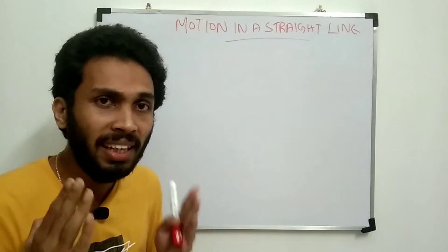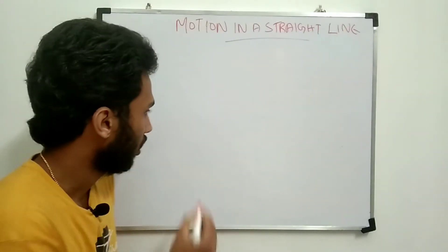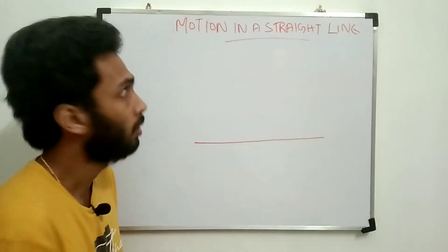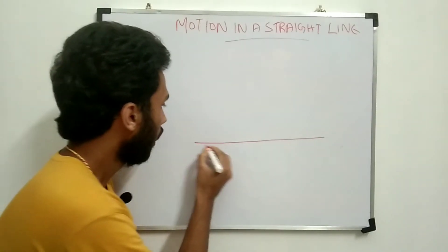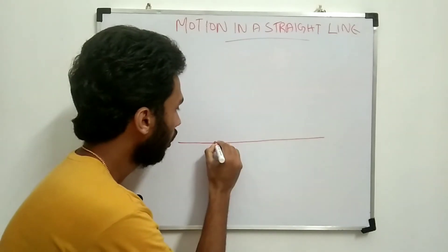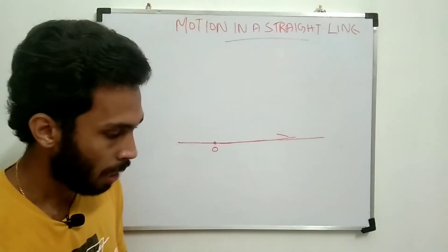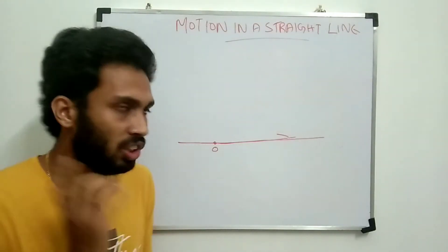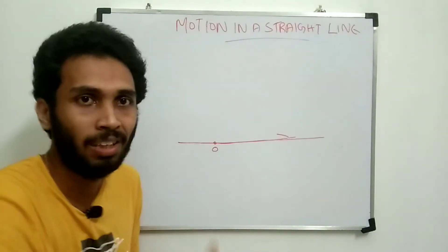In any condition, distance and displacement will be equal only in the case of straight line motion — one dimensional motion. In that case we can say that distance is equal to displacement.